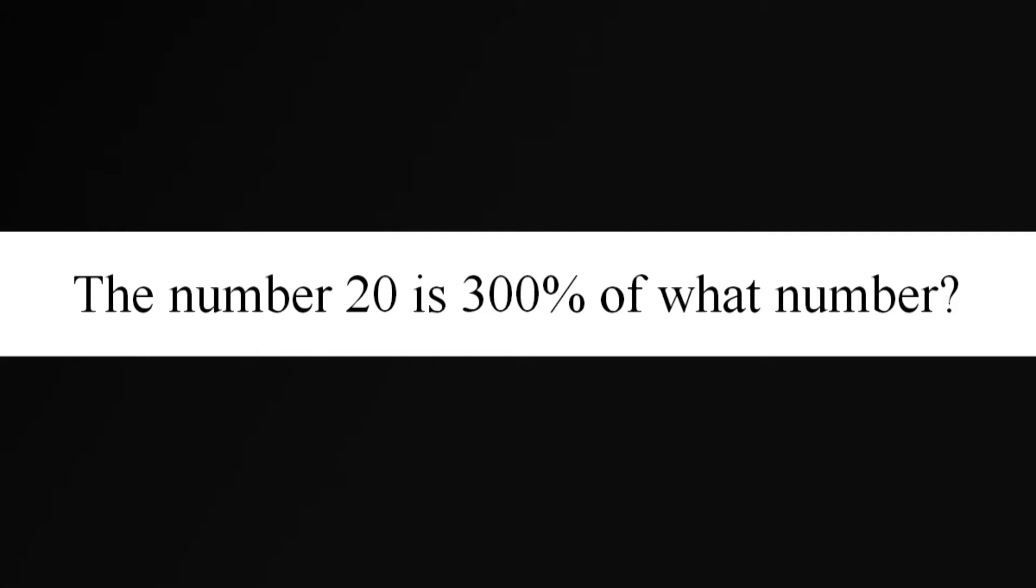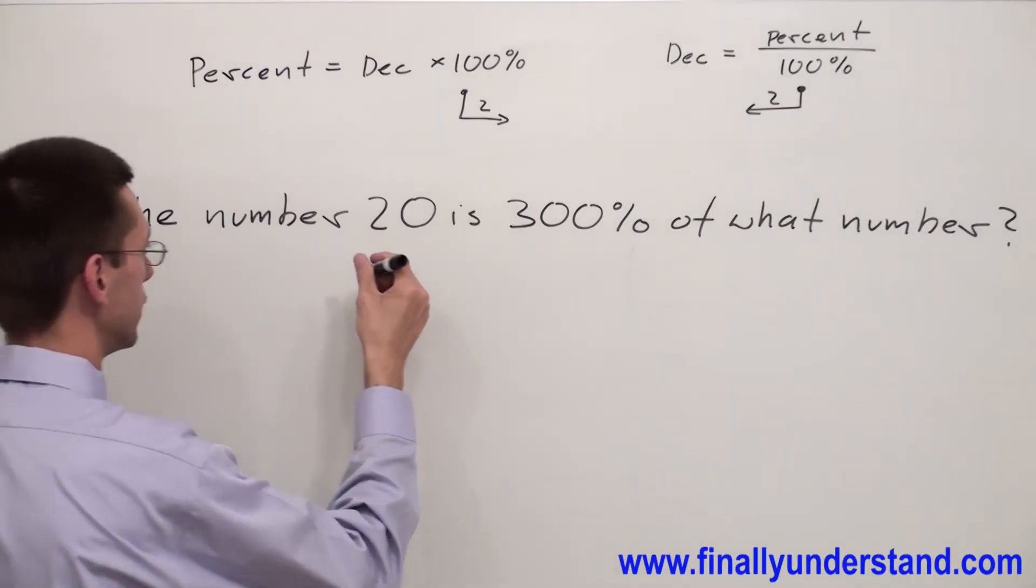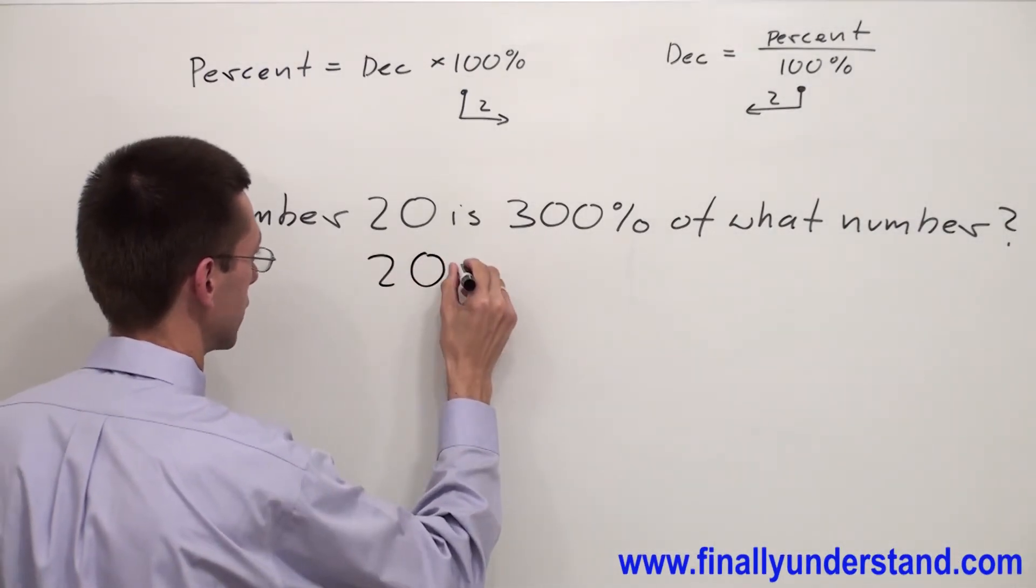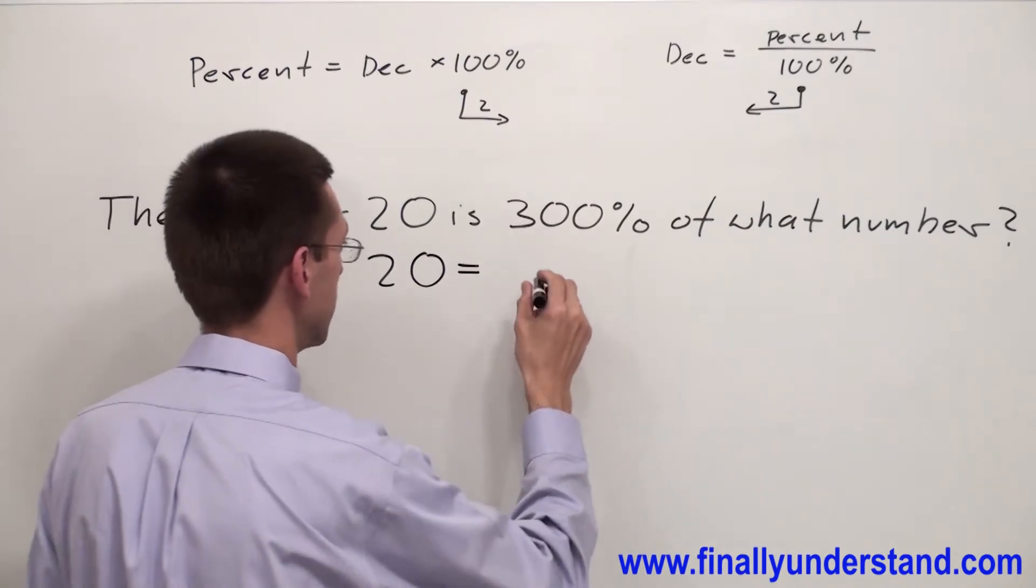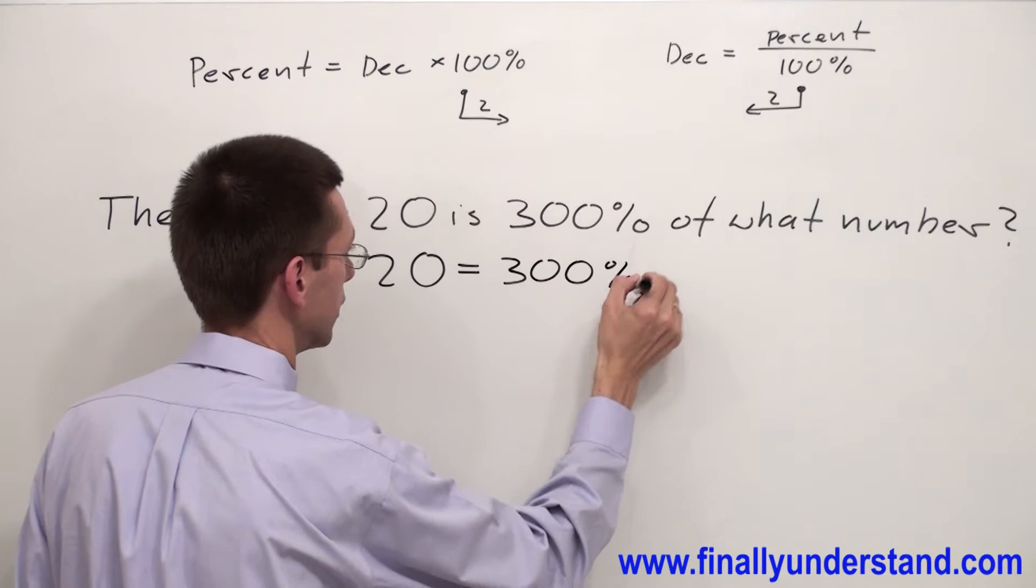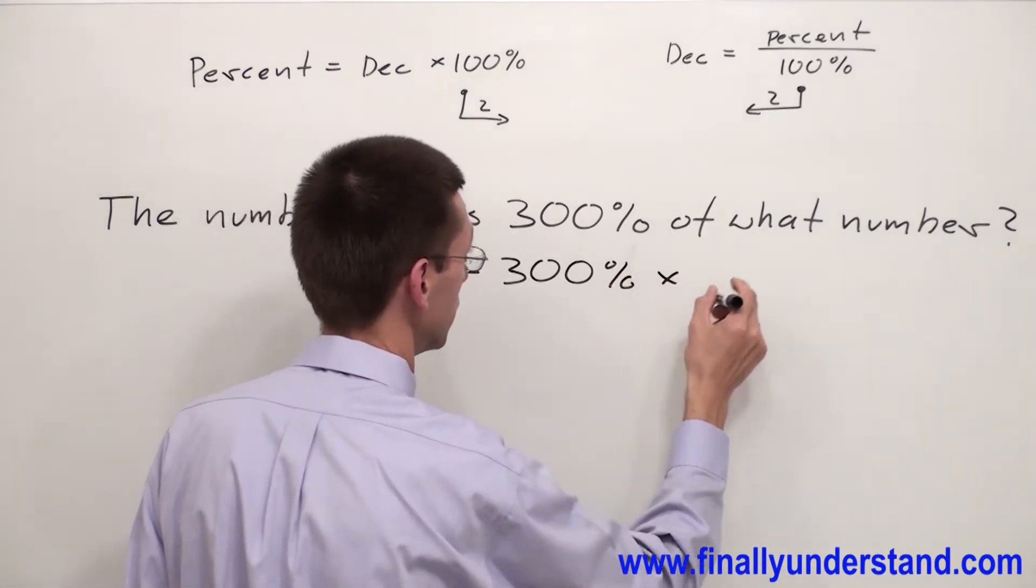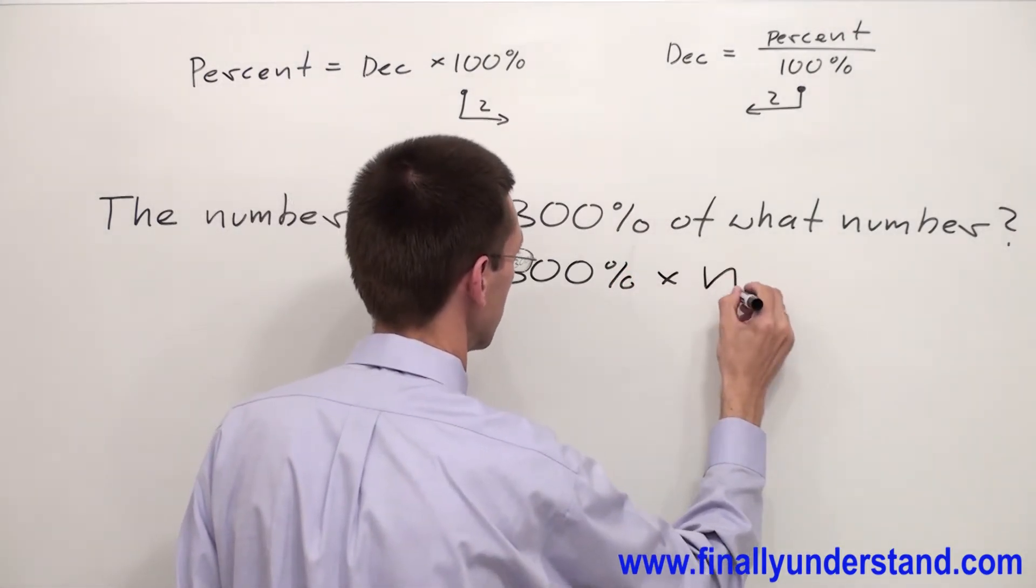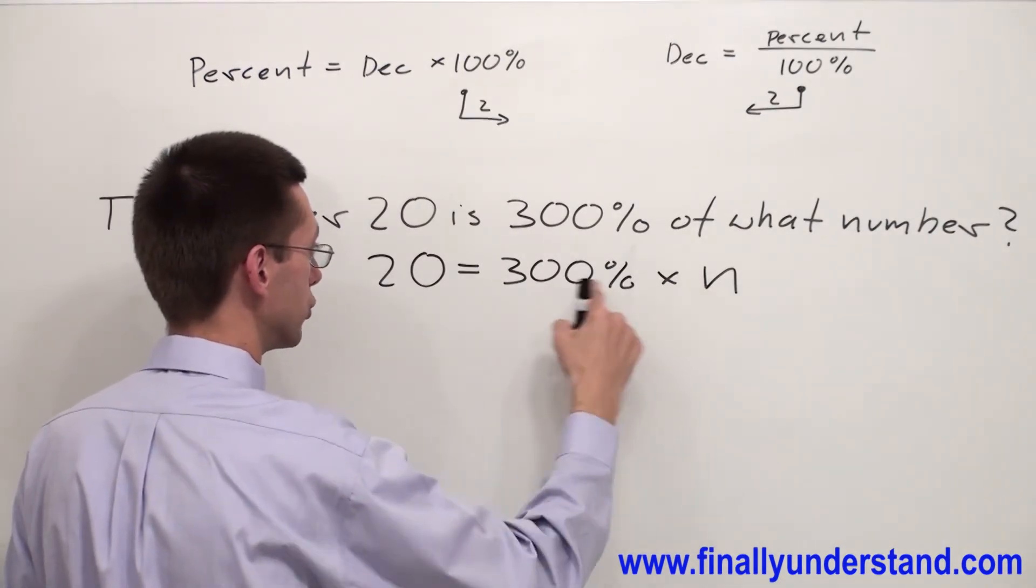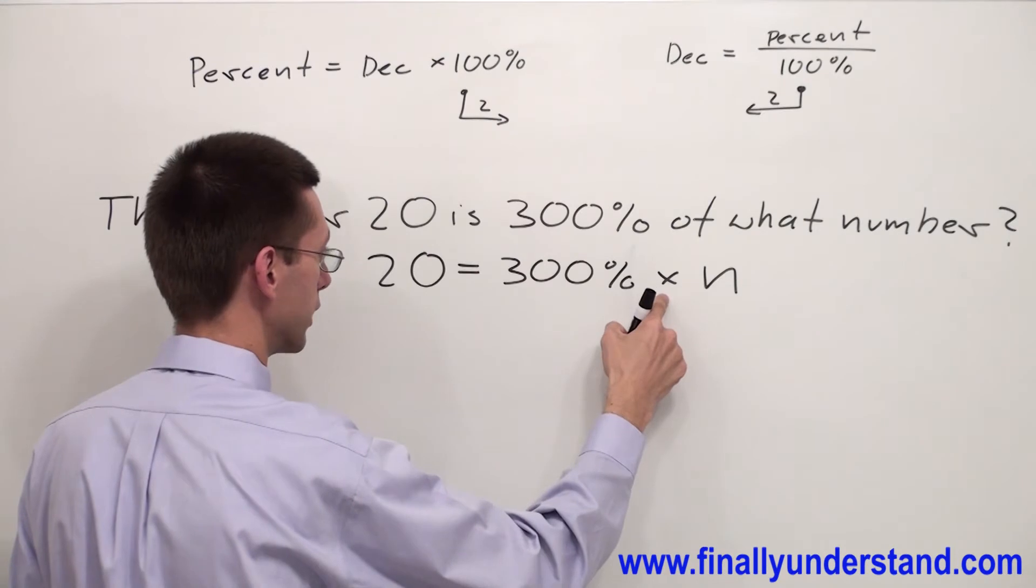Let's take a look at this example. We're going to write the equation first. I have the number 20, and remember 'is' stands for the equal sign. I have 300% - 'of' is multiplication - and 'what number' is my unknown. I want to find the value of n. So the equation is: 20 = 300% × n.